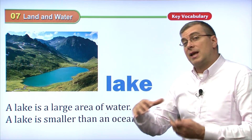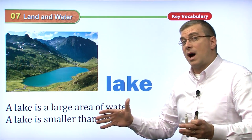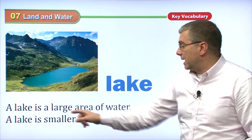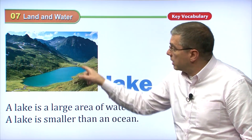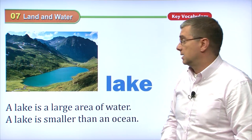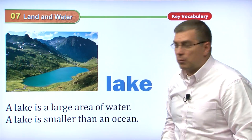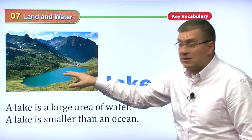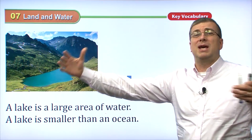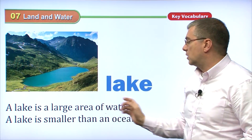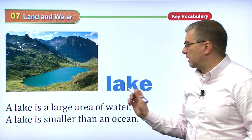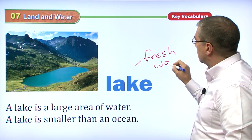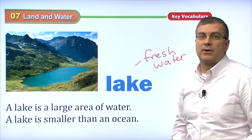As I said before, if the water in a river — especially a wide river — is not moving, then we call it a lake. A lake is a large area of water. A lake is smaller than an ocean. This is a small lake. Looks like it's in the mountains — very beautiful, picturesque lake. This water will probably be very clear and good to drink. Sometimes lakes are really big, so big you can't see across them. An important feature about lakes: lakes have fresh water. So you can drink it.